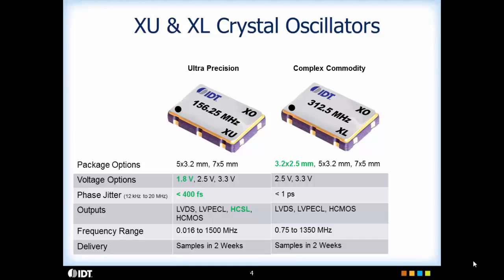Both have extremely wide frequency ranges, with the XU being available from 16 kHz to 1.5 GHz, and the XL being available from 750 kHz to 1.35 GHz, and both have the quick delivery.